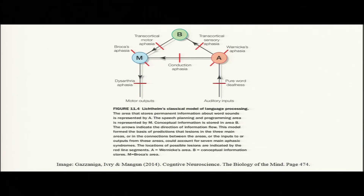Looking at the WLG model diagram: the conceptual centers are represented by B, Wernicke's area by A, and Broca's area by M. Damage to M leads to Broca's aphasia; damage to A leads to Wernicke's aphasia. Damage to the connection between A and M produces conduction aphasia. If the connection between M and B is damaged, you get transcortical motor aphasia. If the A and B connection is disrupted, you get transcortical sensory aphasia.